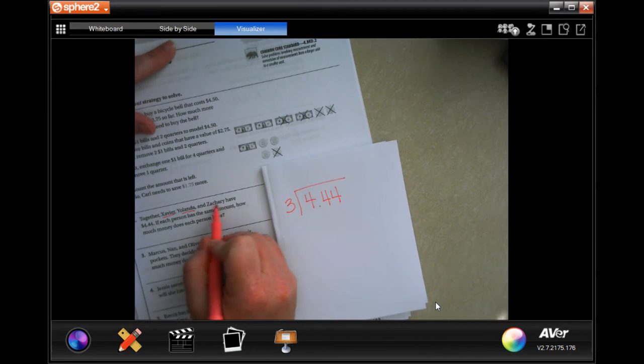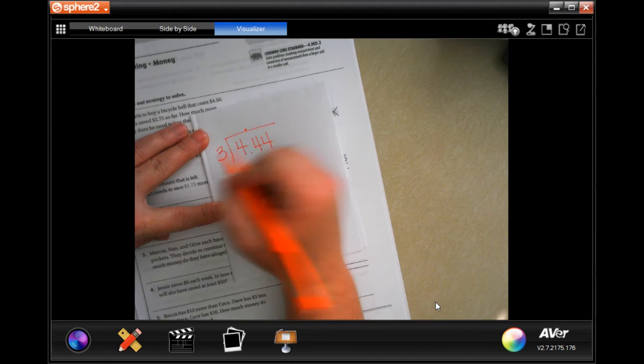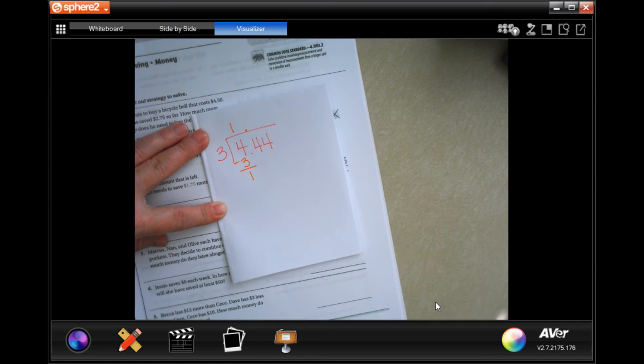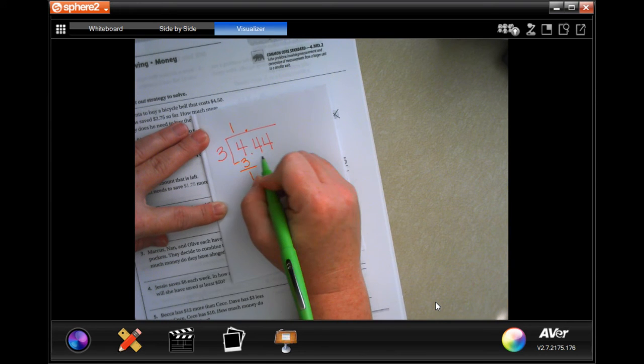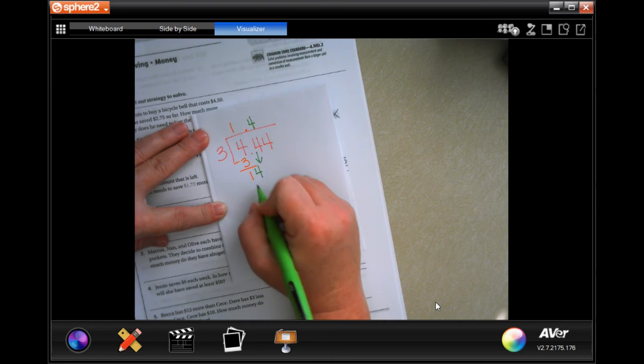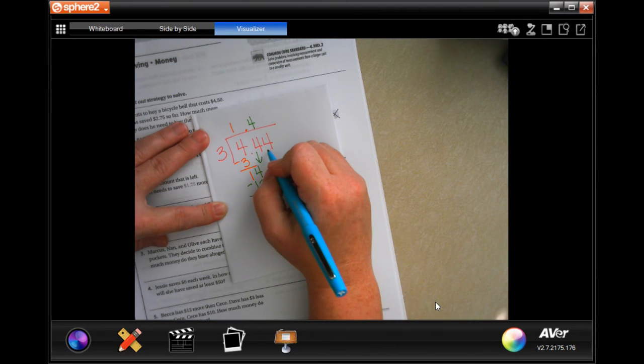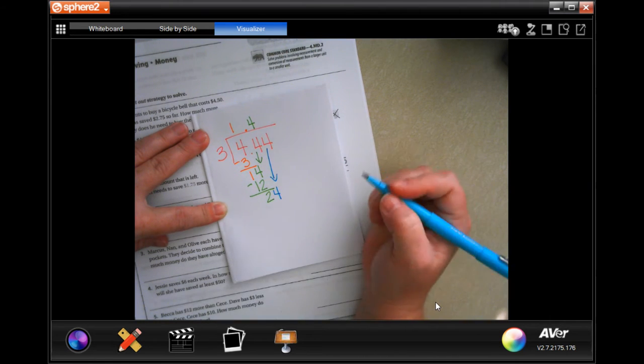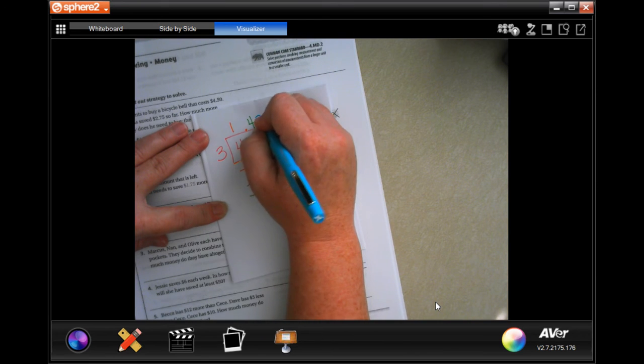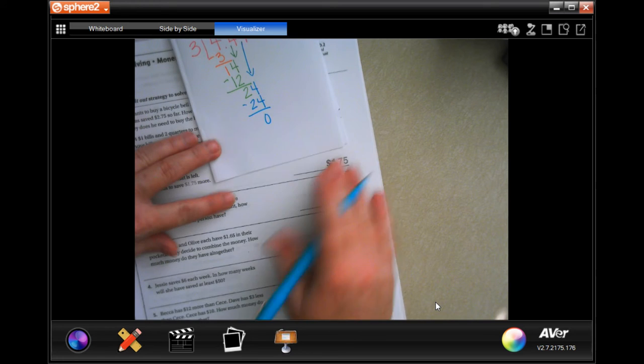Xavier, Yolanda and Zachary. All right, so let's see. Three, well first let's put our decimal up. Three goes into four one time, one times three is three, subtract get one. One is smaller than three so I'm going to bring down my four. Three goes into 14 four times, four times three is 12, subtract get two. Two is smaller than three so I'm going to bring down my last four. Three goes into 24 eight times, eight times three is 24, subtract get zero. So one dollar and 48 cents.